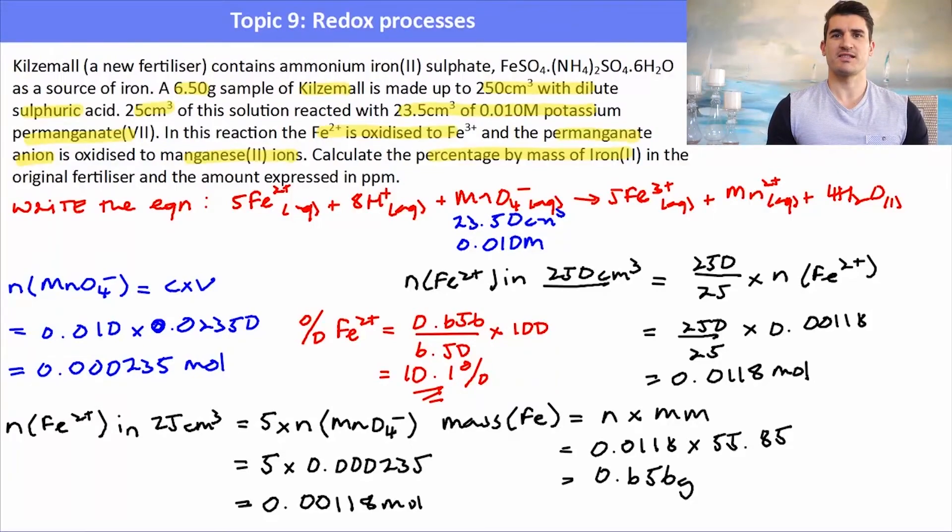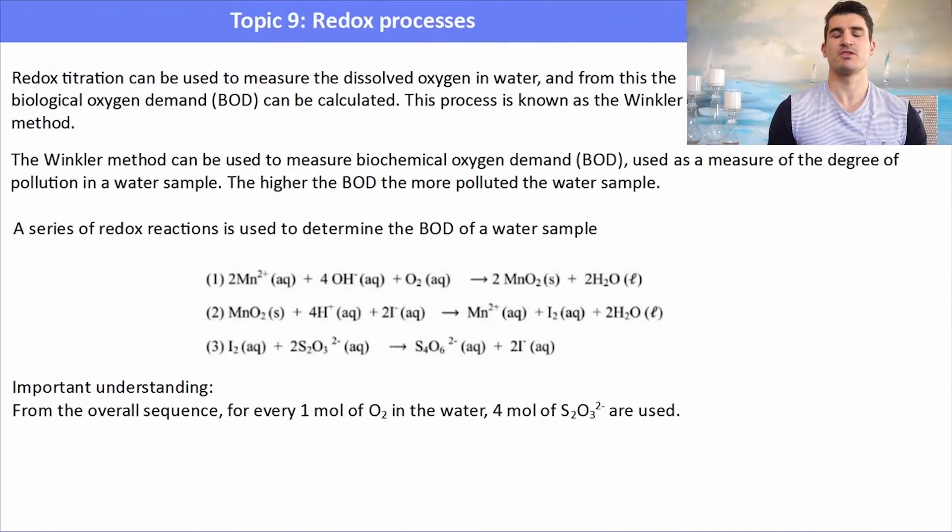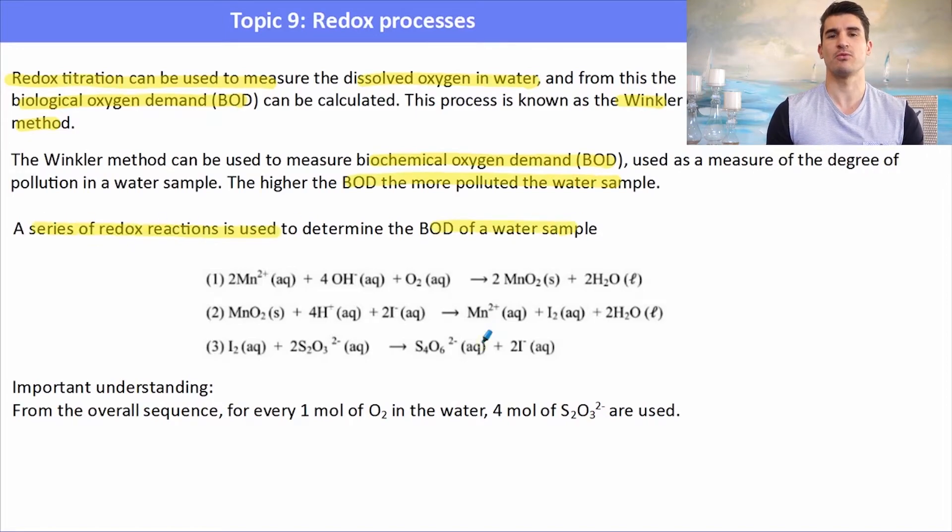Alright, the last part of this video is looking at biochemical oxygen demand. So a redox titration can be used to determine the amount of dissolved oxygen in water. This is known as the biochemical oxygen demand. And this process uses a method called the Winkler method. Now the Winkler method has a series of reactions used to determine the amount of oxygen in a sample.